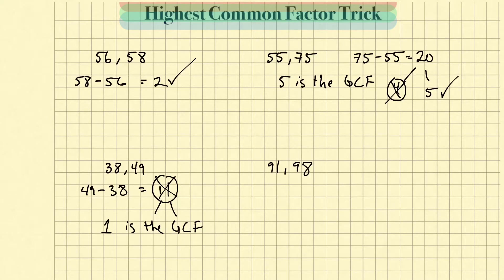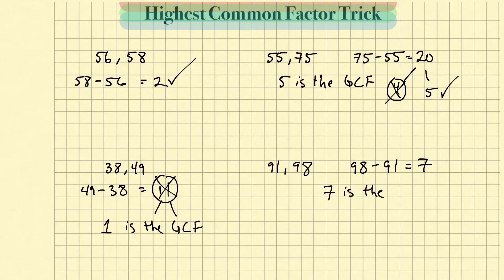Let's look at the next one: 91 and 98. Let's find the greatest common factor. First thing we do is find the difference — 98 minus 91 gives us 7. Now I'm going to ask myself: is 91 divisible by 7? Is 98 divisible by 7? Yes, 91 is divisible by 7 and 98 is also divisible by 7. So 7 is the greatest common factor.